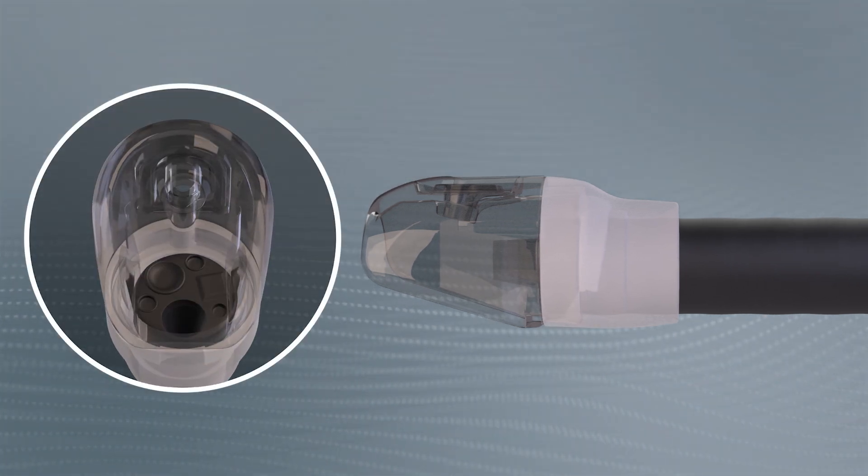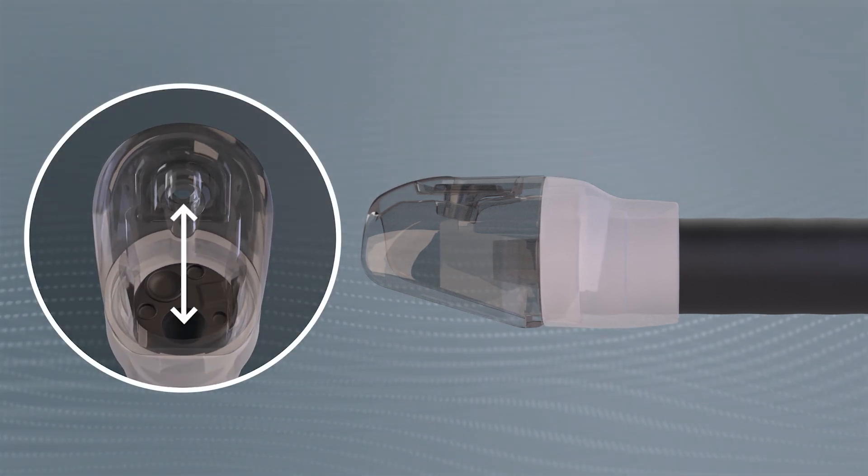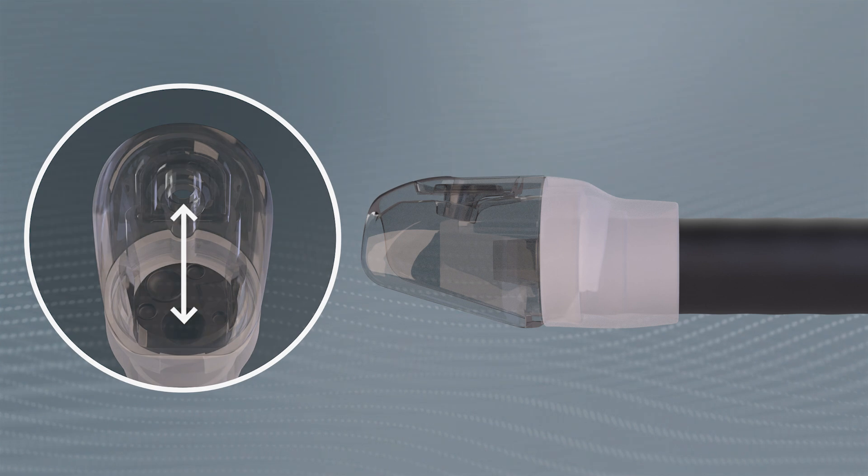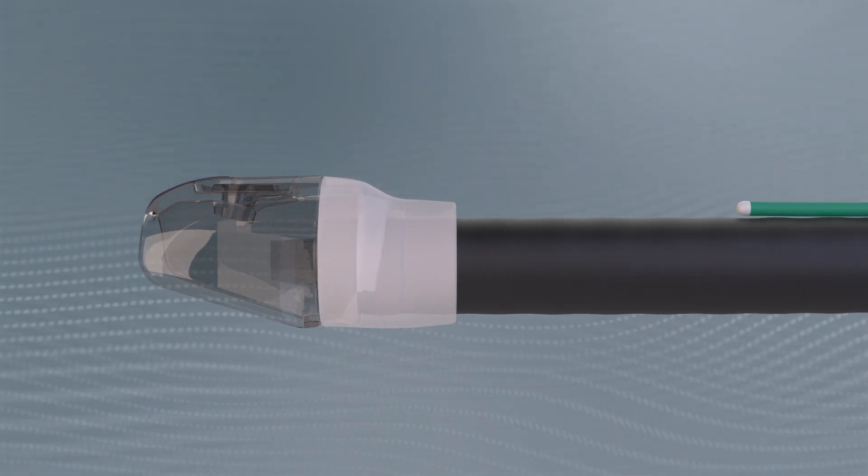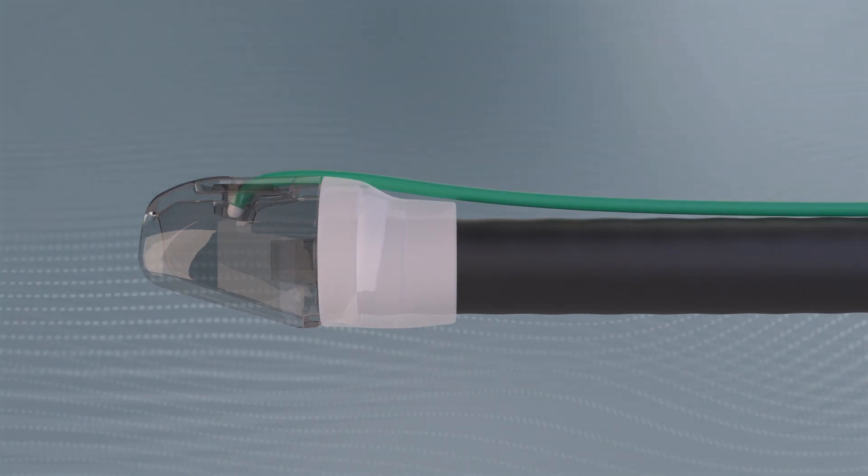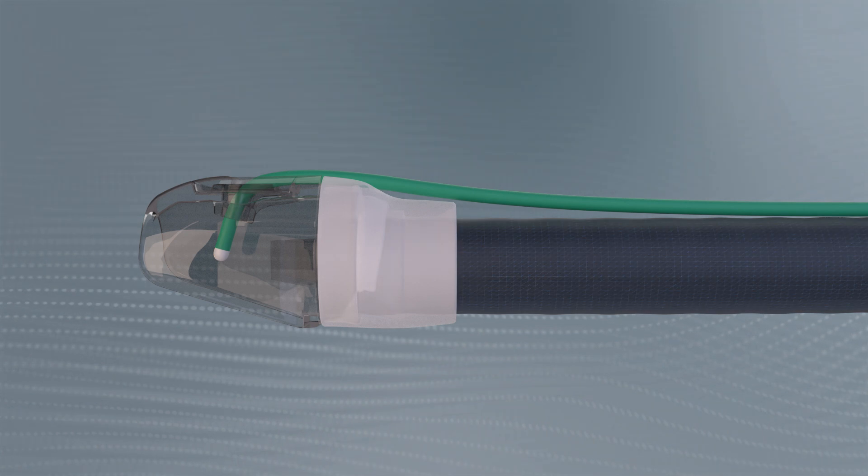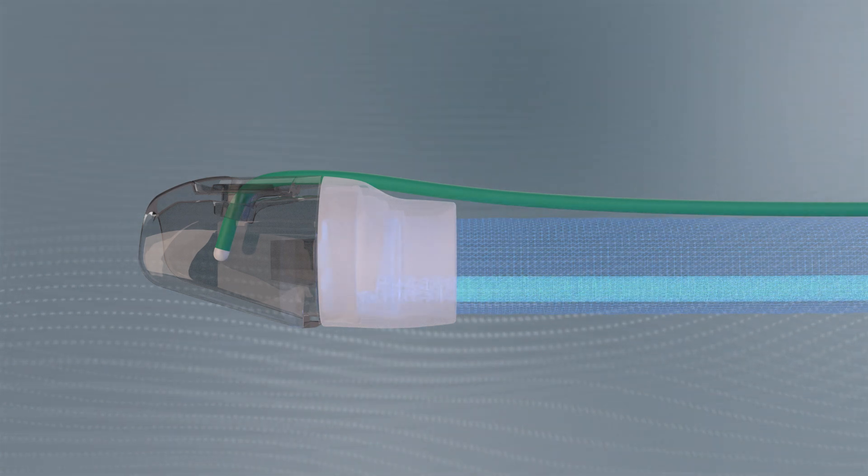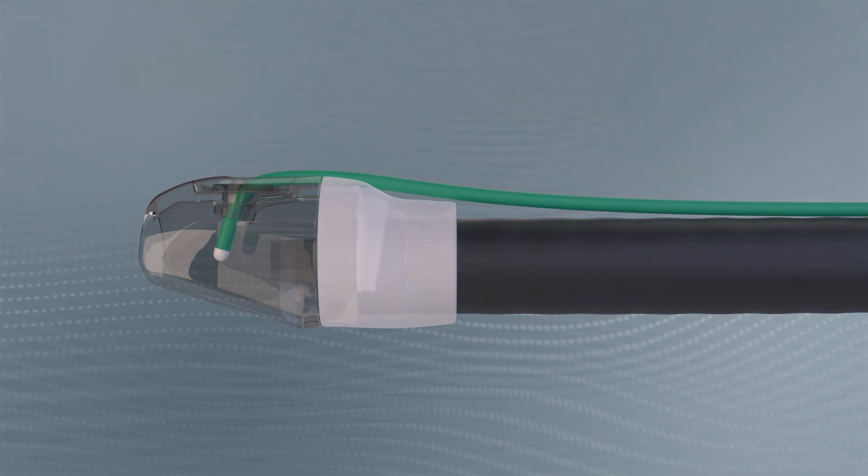When assembled correctly, the working channel and probe opening are directly opposite each other. The probe is guided along the outside via the opening in the cap. This leaves the working channel free, so it can be used for simultaneous injection, for example.